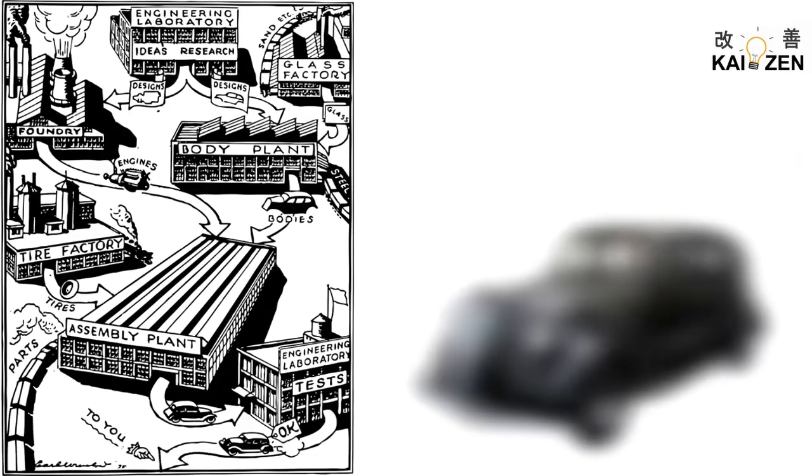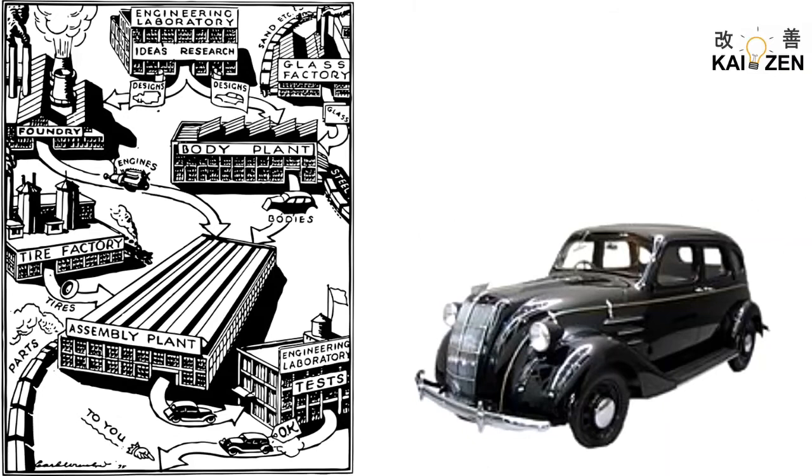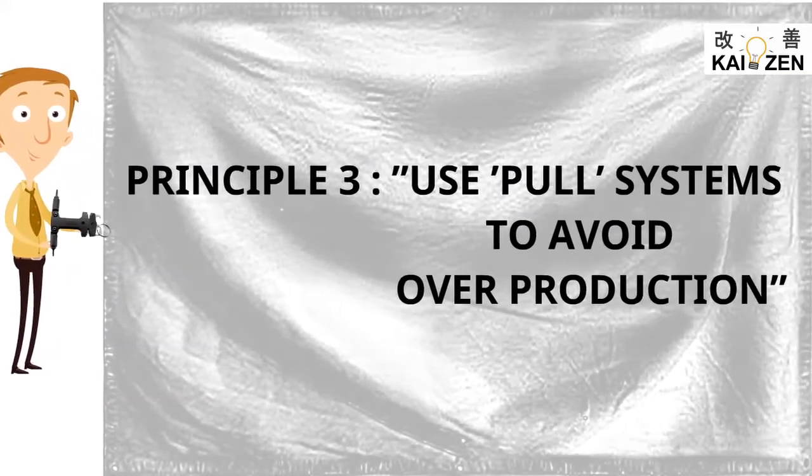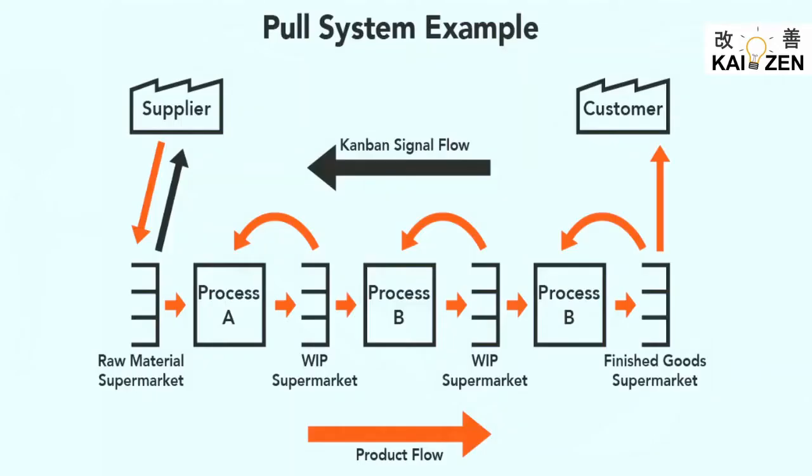Principle 3: Use pull systems to avoid overproduction. Pull system is used to produce only as much as is needed. Following tools are used: supermarkets, Kanban.